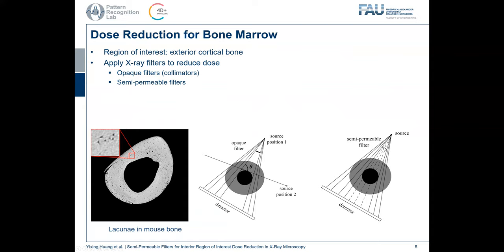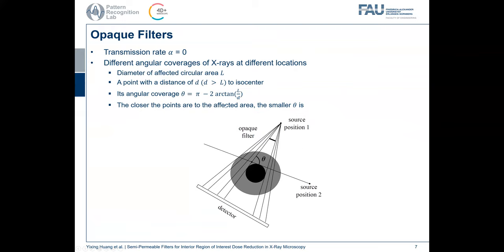With semi-permeable filters, the X-rays can still partially transmit through the X-ray filter. In this work, we want to investigate the image quality and the dose reduction percentage with these two different filters. With an opaque filter, which means the transmission rate alpha equals zero, there is one problem that at different positions, there are different angular coverages. For example, for a point here,